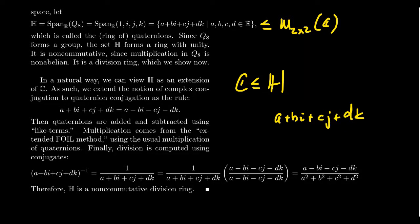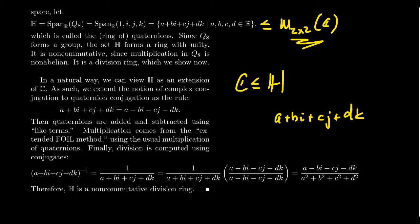You can think of a quaternion as a generalization of a complex number, since complex numbers are just those quaternions whose j and k parts are 0. We can extend the notion of the complex conjugate: if you take the conjugate of a + bi + cj + dk, you switch the sign of the non-real parts — the i, j, and k parts. In terms of addition, you just combine like terms; subtraction the same; and multiplication, you fold everything out. That multiplication extends that of the complex numbers.